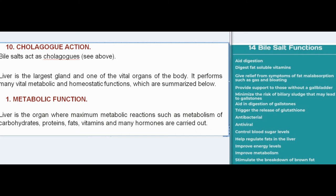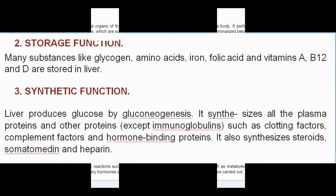The liver is the largest gland and one of the vital organs of the body. It performs many vital metabolic and homeostatic functions. Metabolic function: the liver is the organ where maximum metabolic reactions occur, including metabolism of carbohydrates, proteins, fats, vitamins, and many hormones.